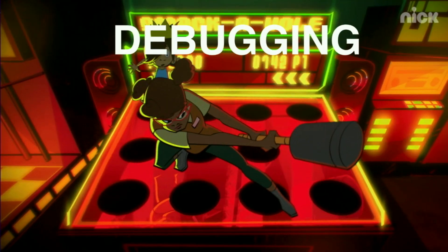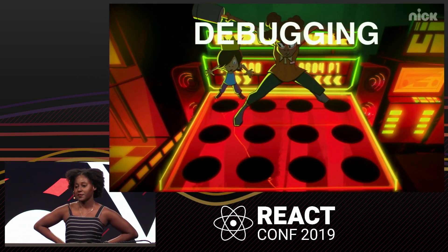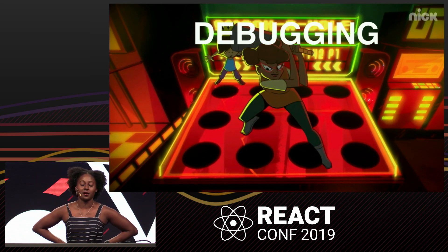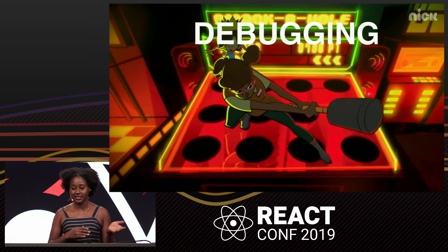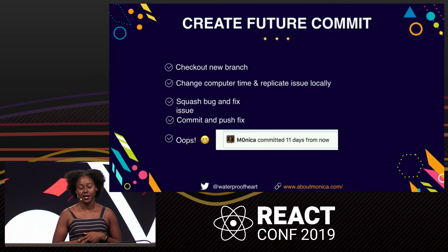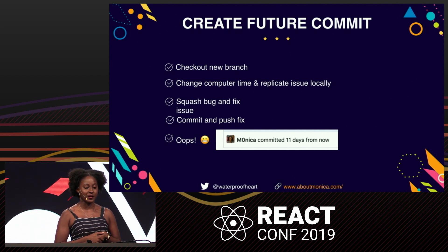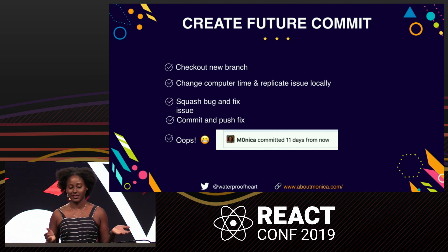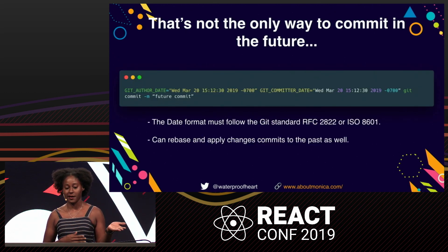How I discovered this is I was debugging an issue at work. We have a calendar in our product, and there was a bug that only popped up on certain dates. So I was trying to reproduce it locally, which involved me changing the clock time on my computer to simulate what things look like in the future. I checked out my branch, changed the time, was able to replicate the issue locally, and then by the time I pushed it up to GitHub, it said it was committed 11 days from now. That's when I realized GitHub is actually honoring the time in Git, not using their own server time.